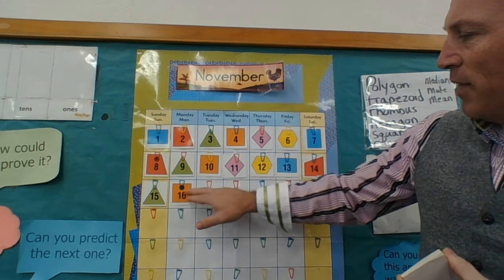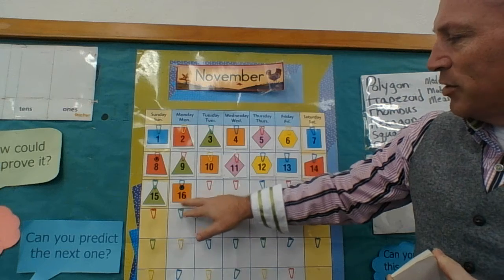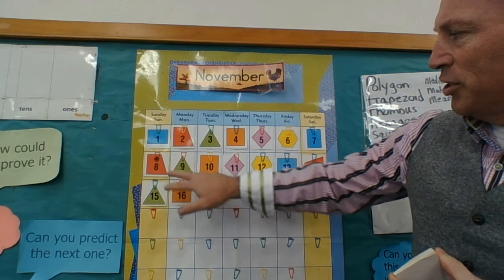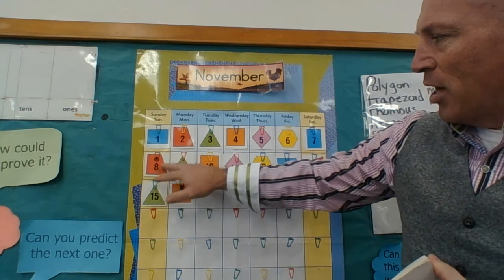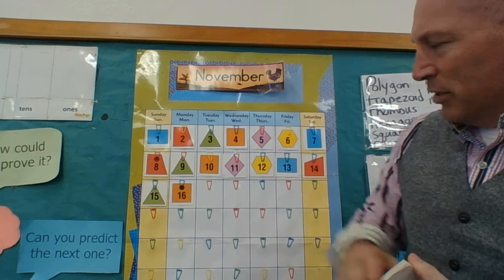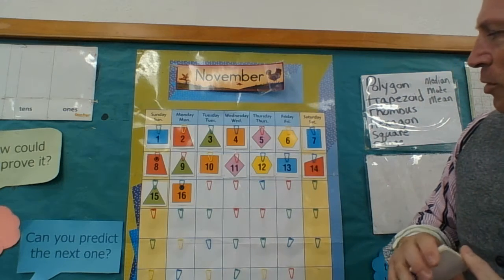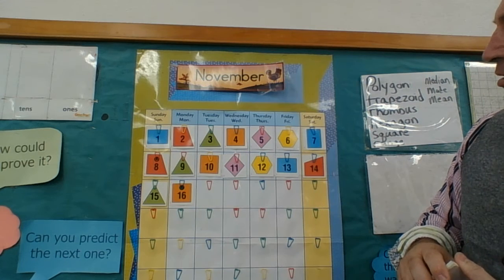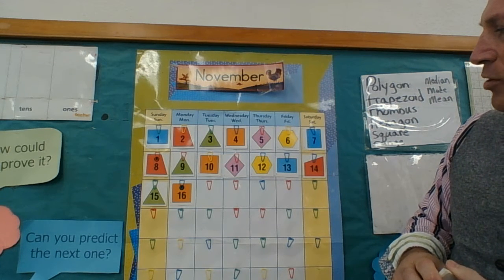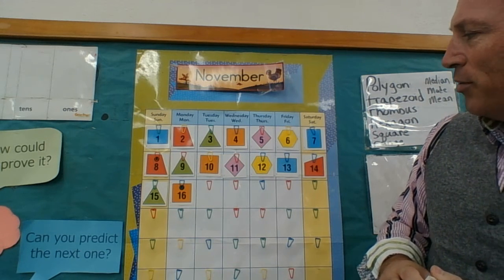What do you think that dot — the number 16 — has in relationship to the other dot number, which is eight? We should really start seeing that pattern there.